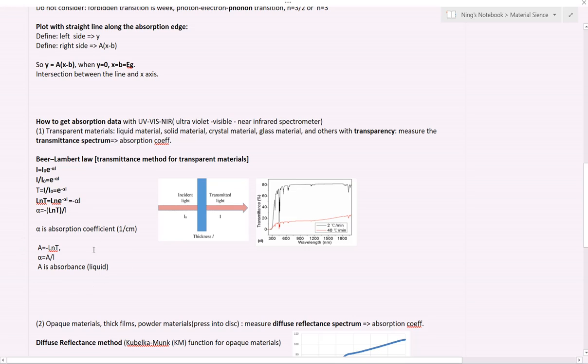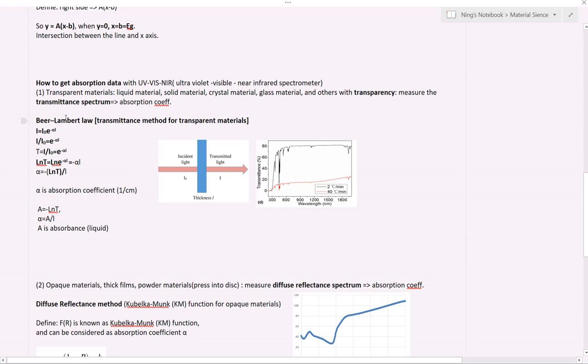Sometimes there is another name called absorption. The definition for this is A equals minus ln T. If we measure the absorption, we can directly divide it by thickness L and get the optical absorption coefficient. Usually, for liquid material, it tends to use the optical absorption. Basically, they are the same, from the same method, same law, Beer-Lambert law.